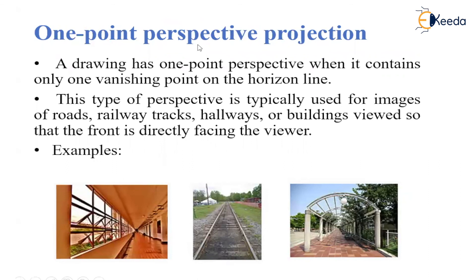In one-point perspective projection, we have only one vanishing point or center of projection. Some examples of one-point perspective projection include a railway track — only one vanishing point is there. In all these examples, we can see only one vanishing point, so this is a one-point perspective projection.